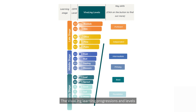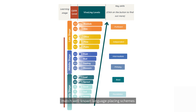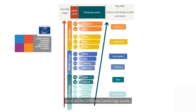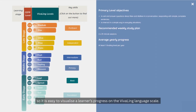The VivaLing Learning Progressions and Levels match well-known language placing schemes such as the CEFR and Cambridge Levels, so it is easy to visualize a learner's progress on the VivaLing language scale.